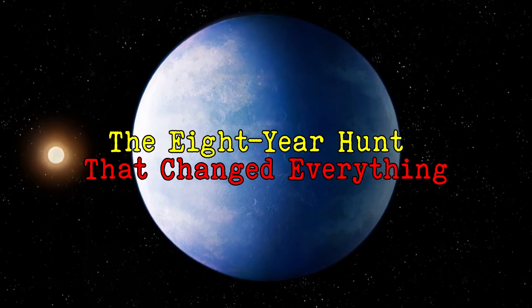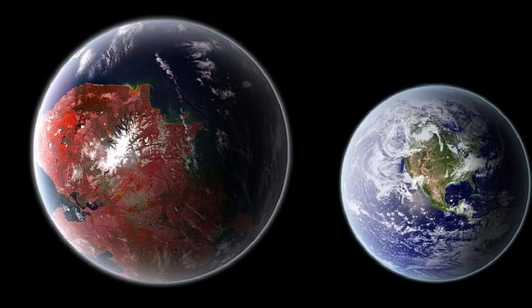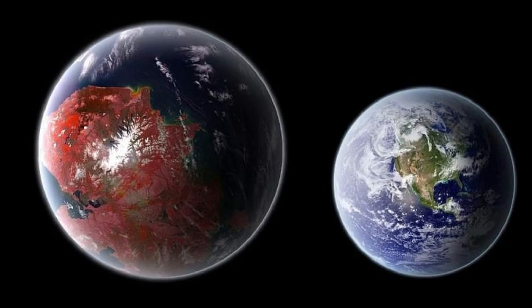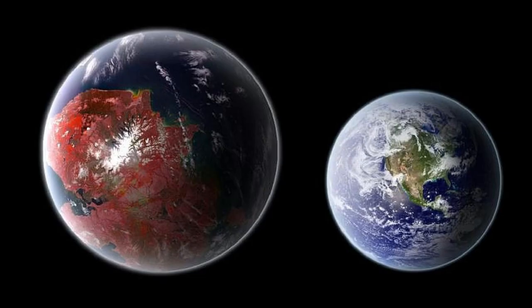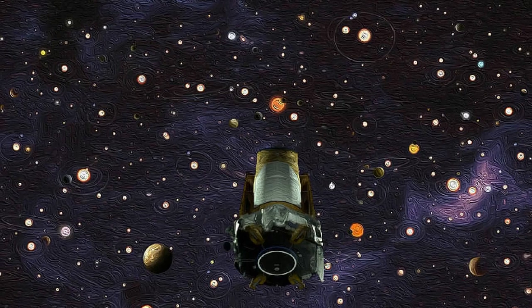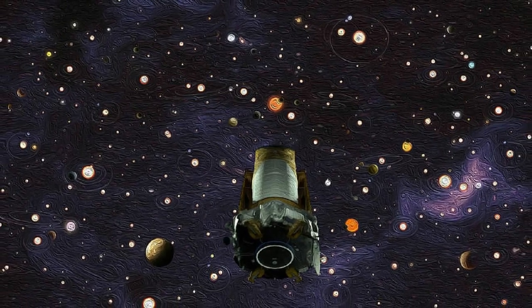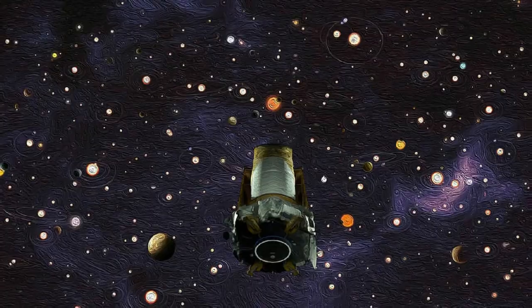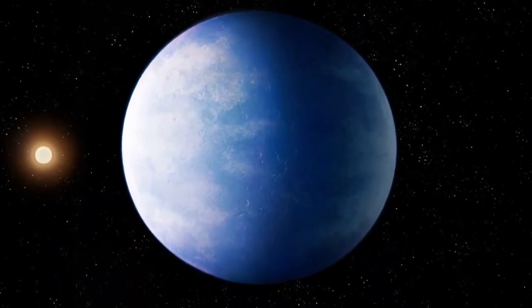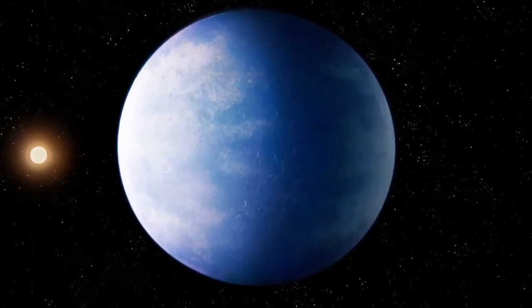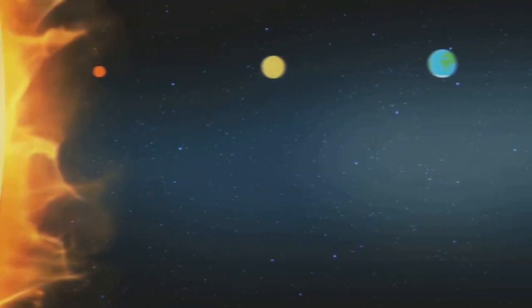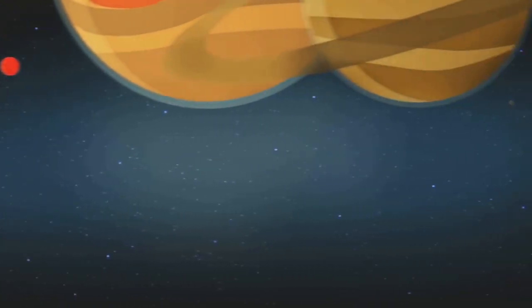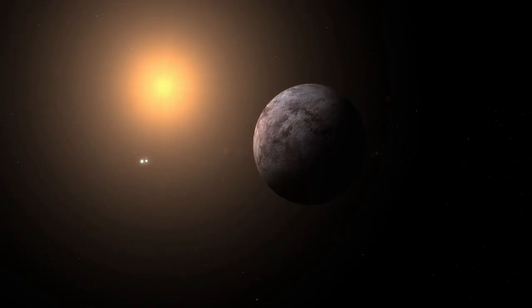The eight-year hunt that changed everything. One planet commanded immediate attention among 1,200 distant worlds catalogued during Kepler's K2 mission in 2015. K2-18b is 2.5 times larger than Earth, with nearly nine times our planet's mass, orbiting a red dwarf star in the constellation Leo.